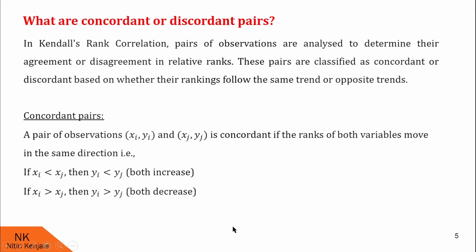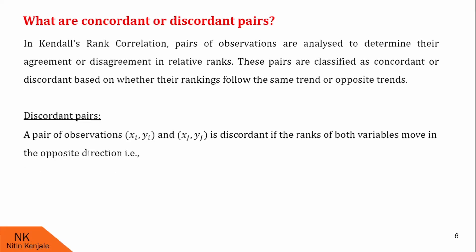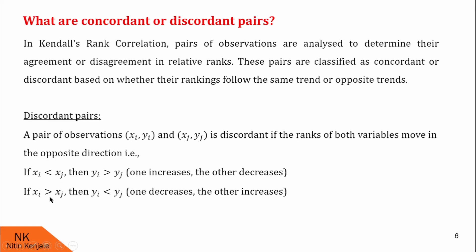Otherwise, they are called discordant. A pair of observations (xi, yi) and (xj, yj) are discordant if both variables move in opposite directions. That is, if xi is less than xj, then yi is greater than yj; or if xi is greater than xj and yi is less than yj, then these two pairs are discordant.